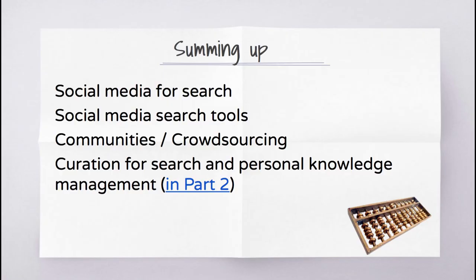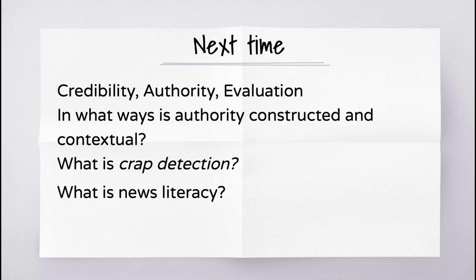Summing up this week: we looked at social media for search, social media search tools, communities of practice online, and crowdsourcing. You will also be looking at curation for search and personal knowledge management. Next time we'll look at the all-important notions of credibility, authority, evaluation, and as the ACRL frames ask: in what ways is authority constructed and contextual? We'll look at Rheingold again as he talks about crap detection, and we'll look at news literacy in a 24/7 news cycle. Thank you very much and I'll see you in the threads.